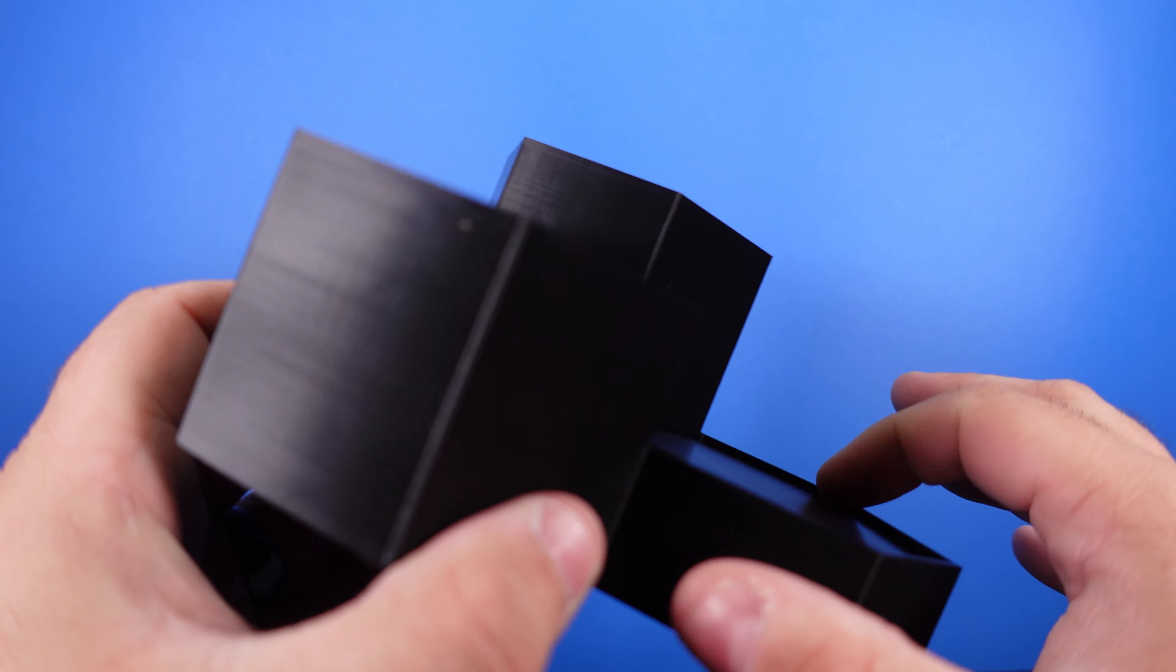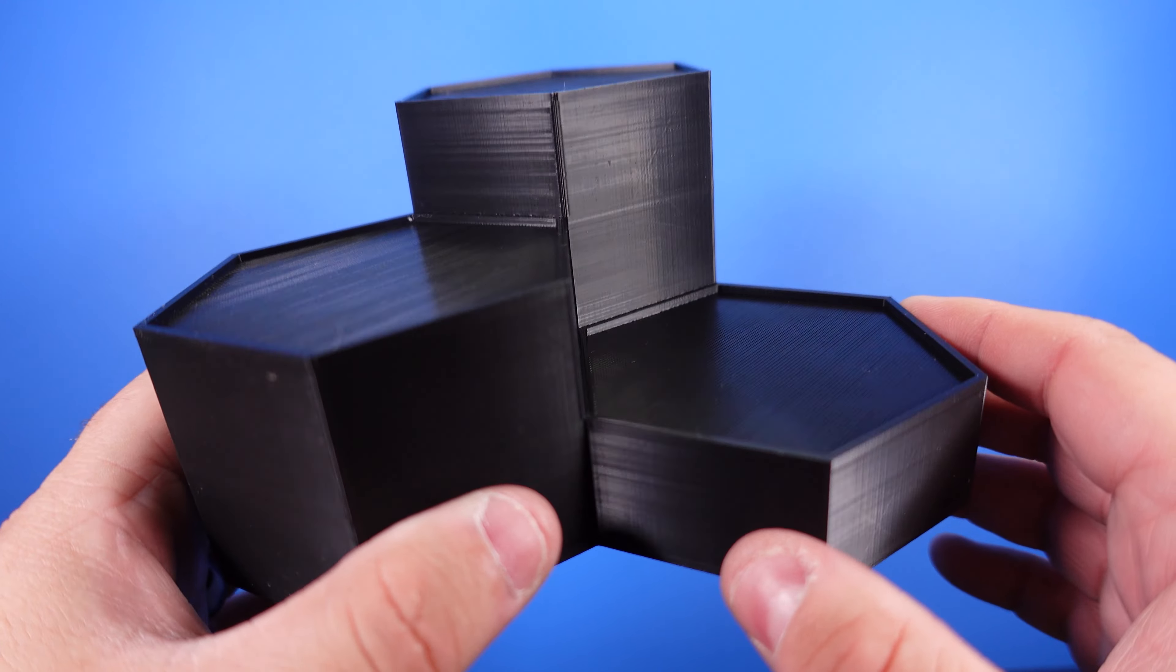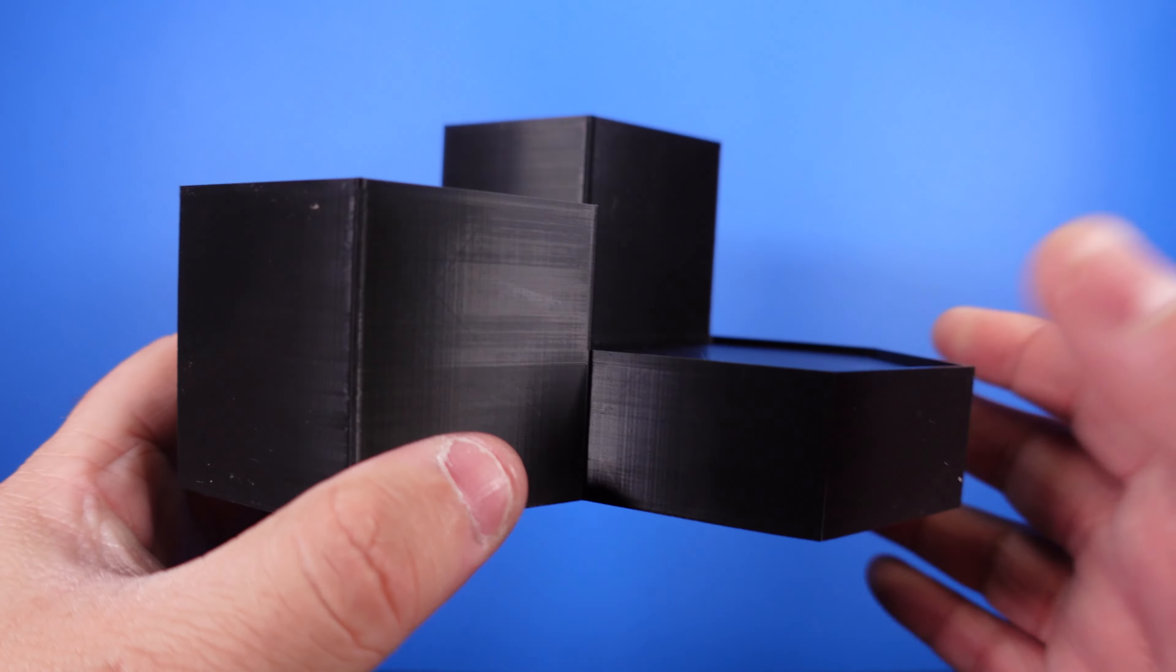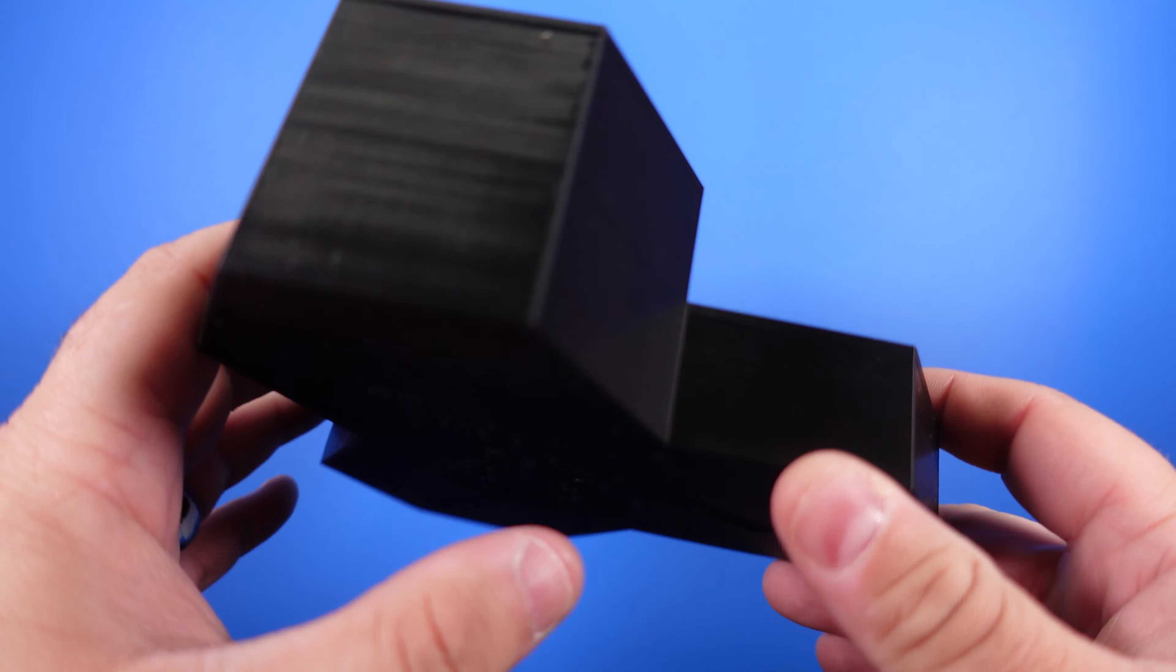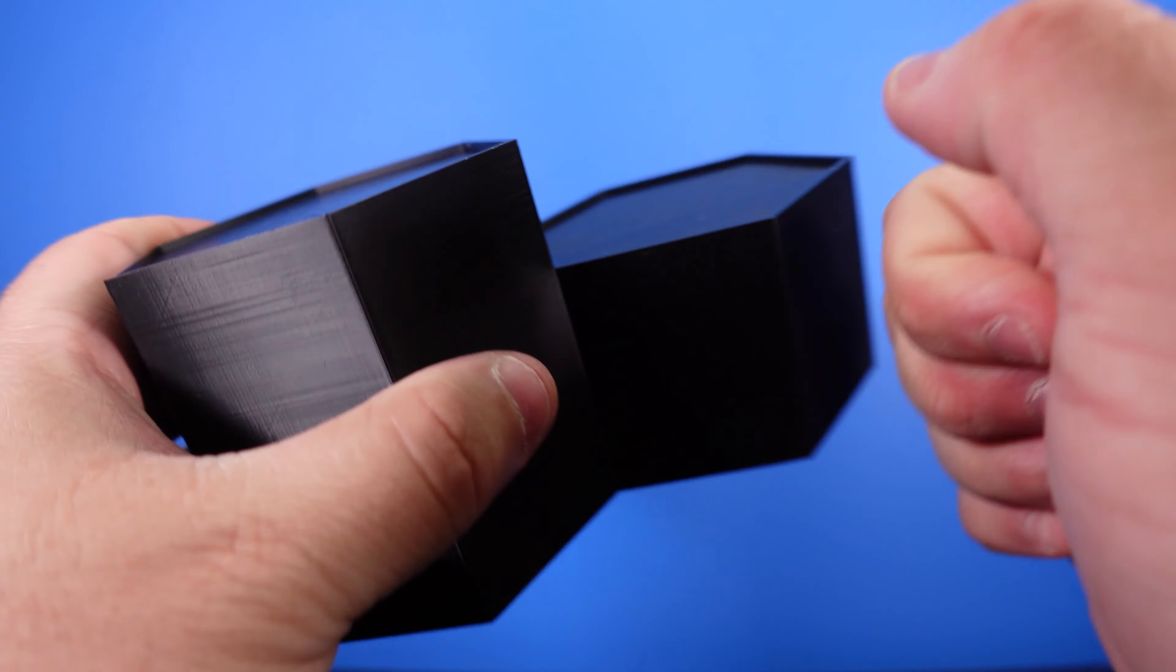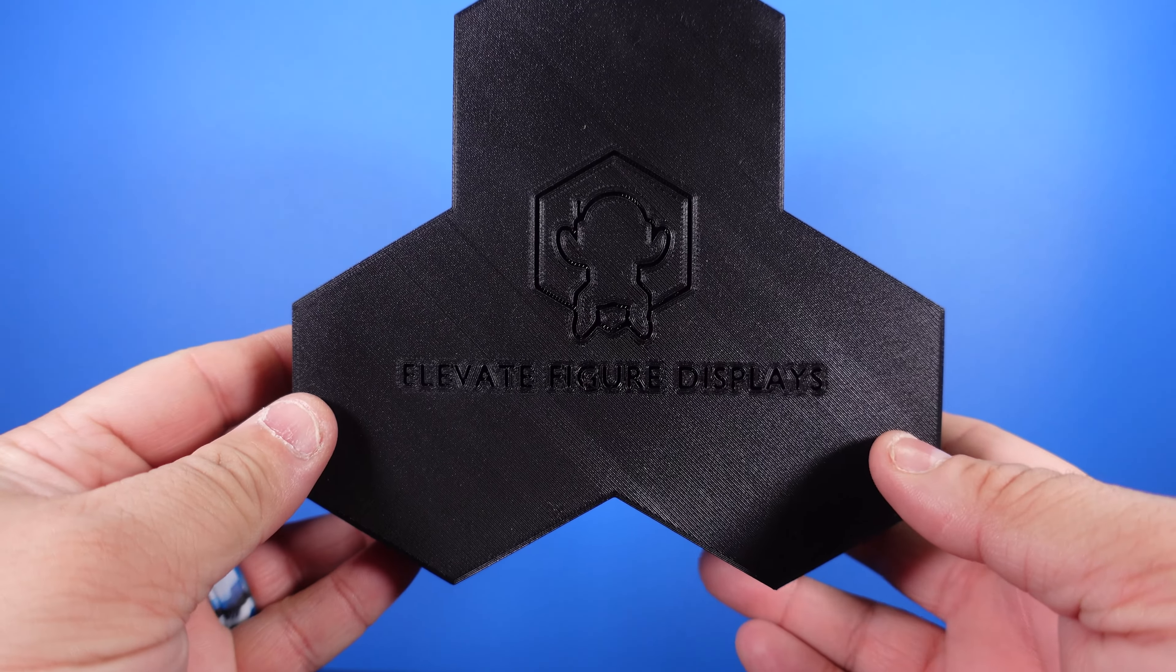It has that built-in edge right here to keep the figures from falling, which is great. It does work with all 1:12 scale figures, which is perfect because that's what most of us collect. It's not acrylic though. It is made out of a premium plastic blend for maximum durability and stability.